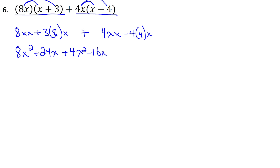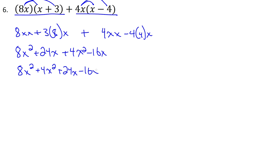Once we simplify, the brackets are all gone and we get 8x² + 24x + 4x² - 16x. Now looking for like terms — x² terms and x terms — we reorder: 8x² + 4x² + 24x - 16x. That gives 12x² + 8x, and 24 - 16 gives 8x. So the final simplified answer is 12x² + 8x.